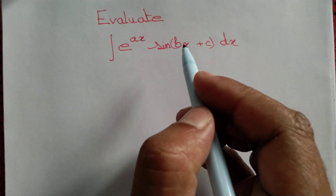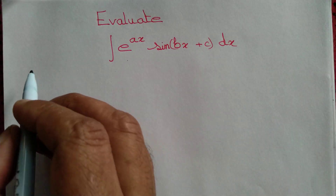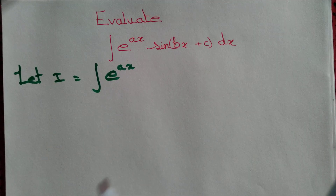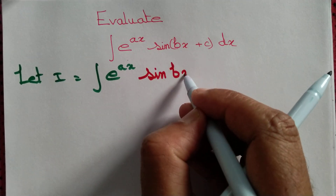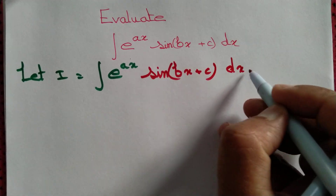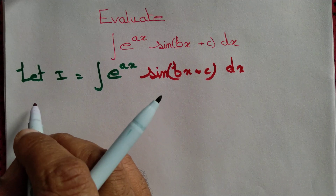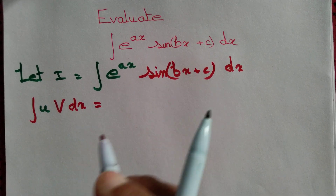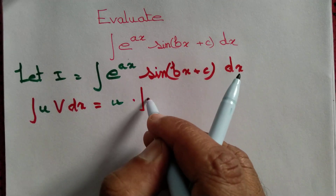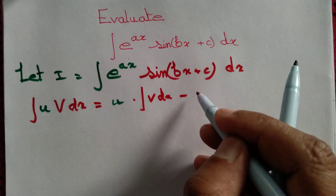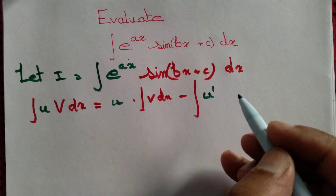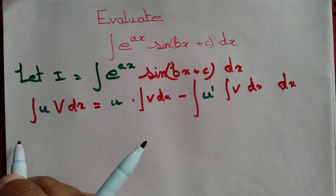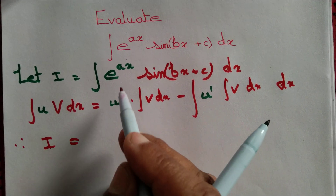Let's evaluate the integral of e to the power ax times sine bx plus c dx. We start by writing let i equal to integral of e to the power ax times sine bx plus c dx. This integral involves a product of two functions, so let's recall the formula: integral of u times v dx equals first function u times integral of v dx, minus integral of derivative of first function times integral of v dx, and that has to be integrated again.